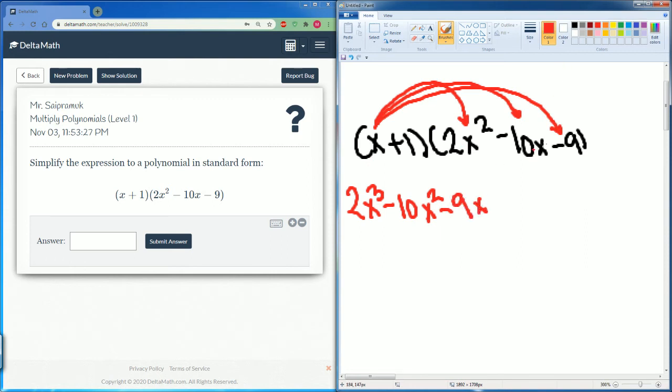So the x was distributed to all three terms. Once we do that, we do it to the 1. 1 times 2x becomes 2x squared. 1 times negative 10x gets you negative 10x. And 1 times negative 9 just gets you negative 9.